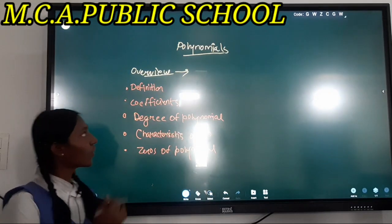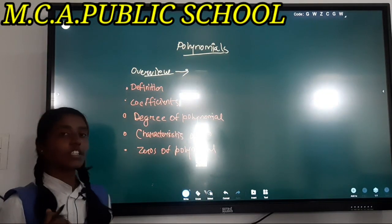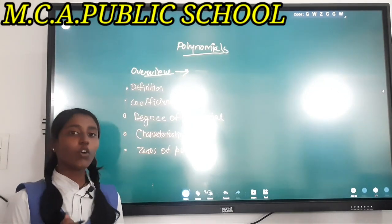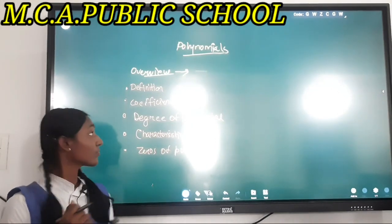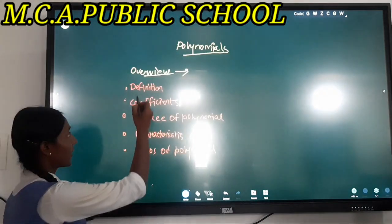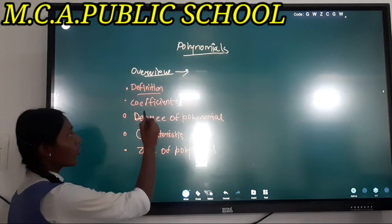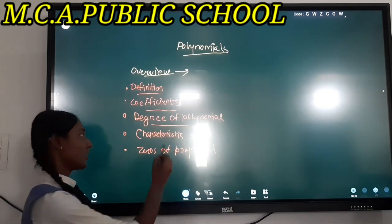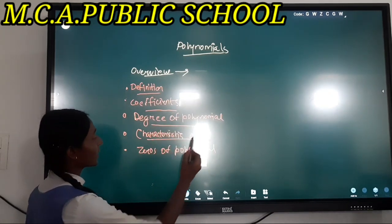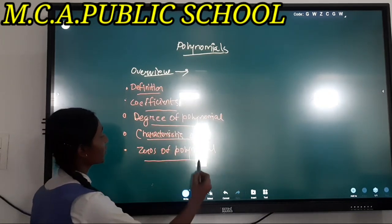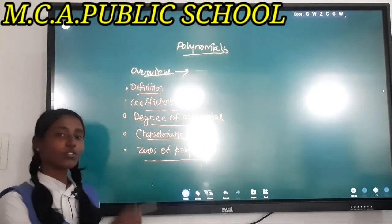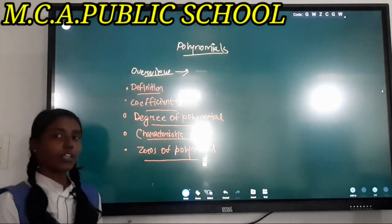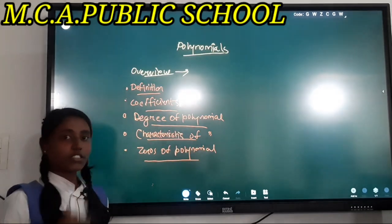Let us have a look at the overview of this chapter on polynomials. The overview covers the definition of polynomial, coefficient of polynomial, degree of polynomial, characteristics of polynomial, and zeros of polynomial. We are going to discuss all these subtopics of this chapter.